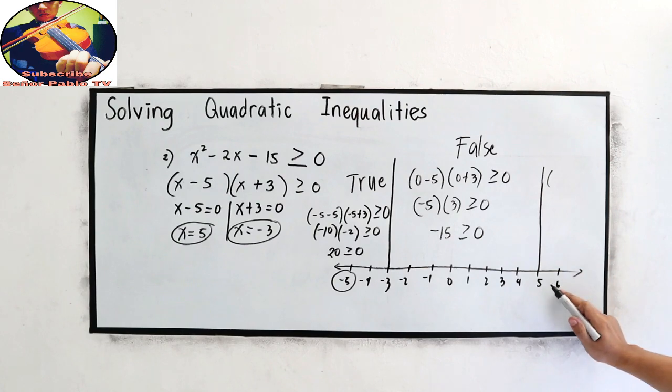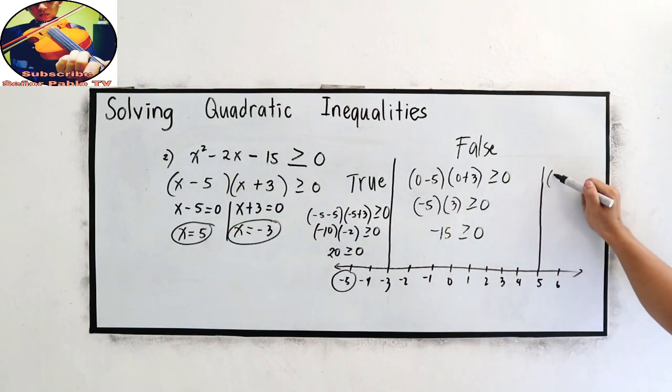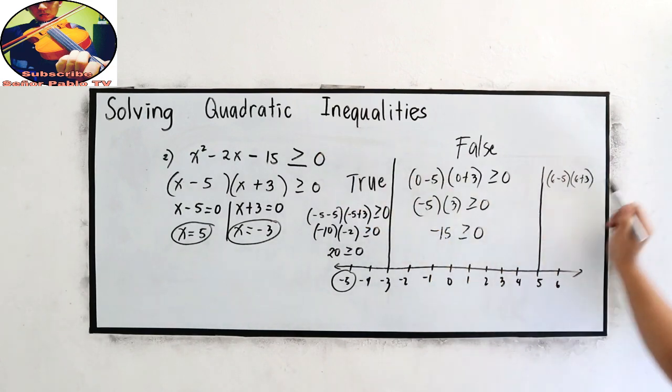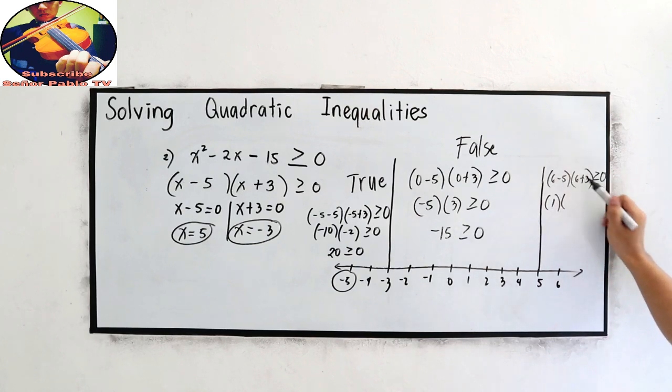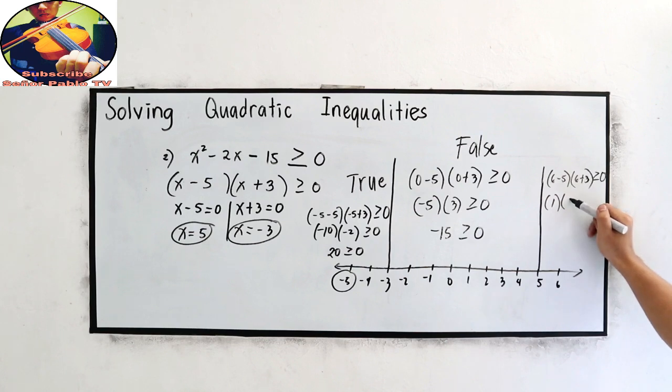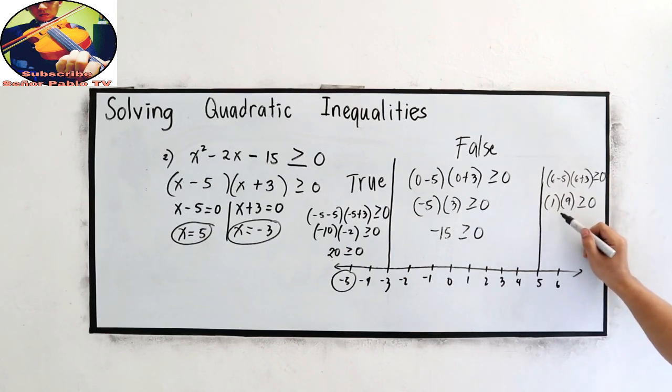So x will be 6. 6 minus 5, 6 plus 3, greater than or equal to 0. 6 minus 5, that is 1. 6 plus 3, that is 9, greater than or equal to 0. So 1 times 9, that is positive 9, greater than or equal to 0. True or false?